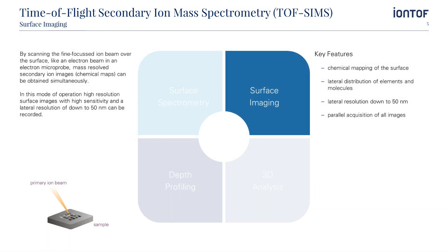By scanning the fine-focused ion beam over the surface, like an electron beam in an electron microscope, mass-resolved secondary ion images — chemical maps — can be obtained simultaneously. In this mode of operation, high-resolution surface images with high sensitivity and a lateral resolution of down to 50 nanometers can be recorded. You can see the lateral distribution of elements and molecules, and due to the parallel mass detection of the time-of-flight analyzer, all images of all different masses can be acquired simultaneously.